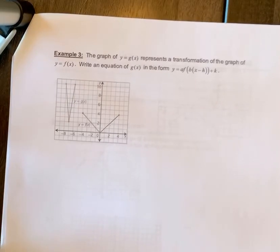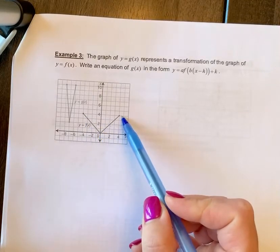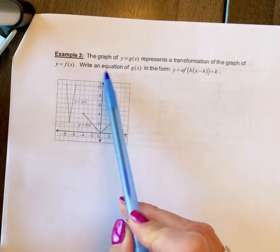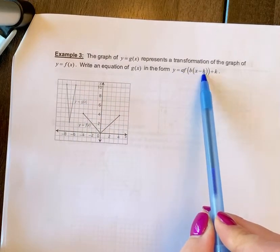All right, example three. The graph of y equals g of x represents the transformation of the graph of y equals f of x. So our original graph is y equals f of x. It has been transformed and become y equals g of x. We're going to write an equation of our new graph g of x in this form where we can see the a, b, h, and k values.